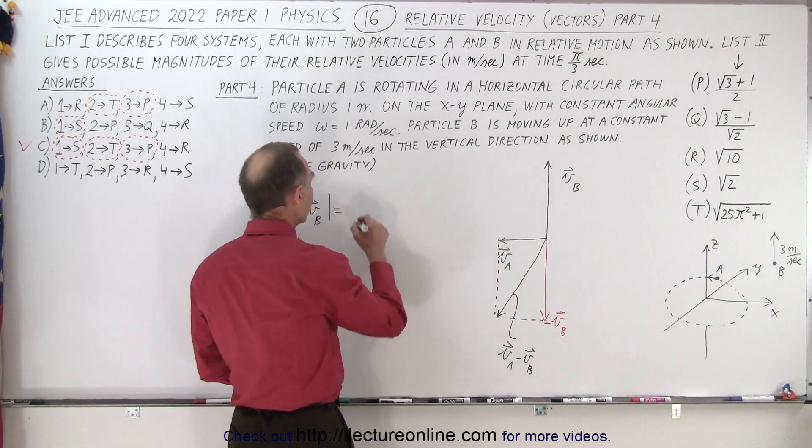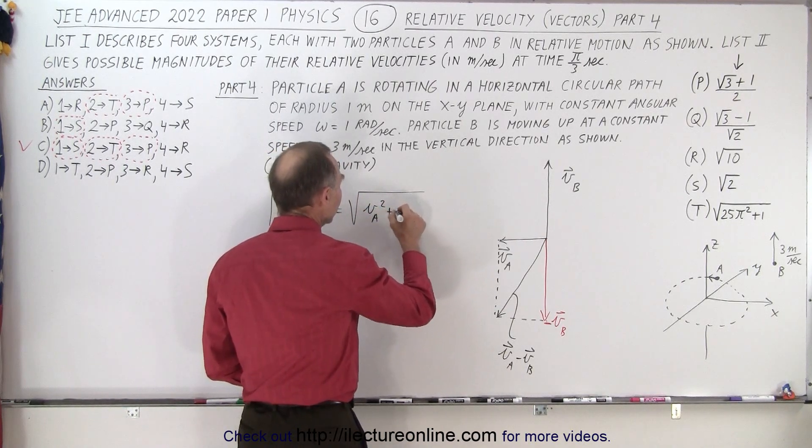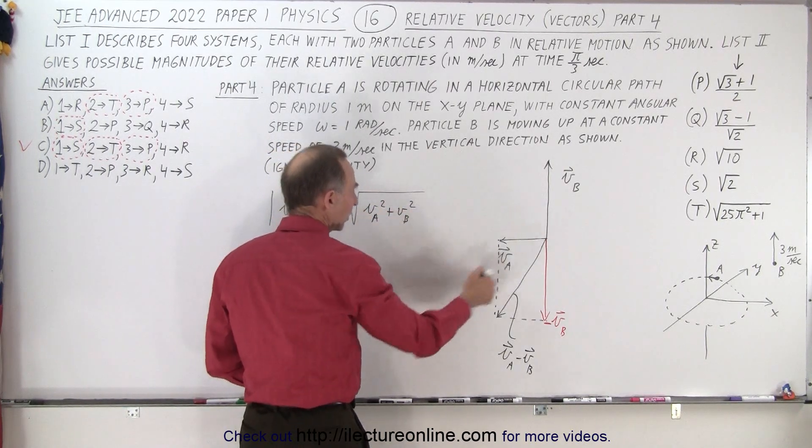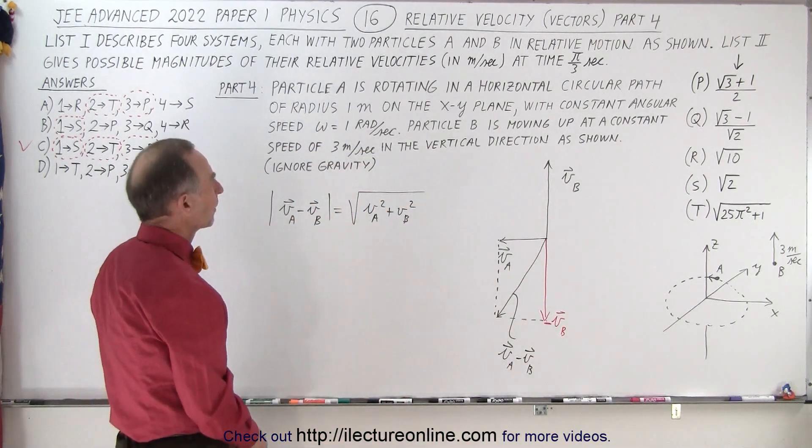The absolute value sign of that would be the magnitude of this vector. And of course, the magnitude of this vector would be equal to the square root of the magnitude of A squared plus the magnitude of B squared because it's simply a triangle, so we use Pythagorean theorem.